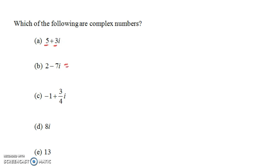Here we have 2 minus 7i. Notice that 2 minus 7i can be thought of as 2 plus a negative 7 times i. So, the real part is 2 and the imaginary part is negative 7 — it is a complex number. What about negative 1 plus three-fourths i? Yes, that's a complex number; there's nothing wrong with having a fraction. Now, what about 8i? Well, 8i is the same as 0 plus 8i, so the real part is 0 and the imaginary part is 8. It is a complex number, and it's called a pure imaginary number when the real part is 0.